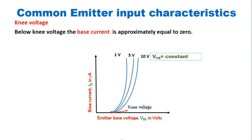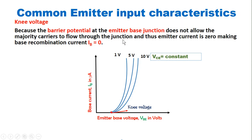From the diagram we can say that below this point — which is called the knee voltage — the base current is approximately equal to zero. This happens because the barrier potential at the emitter base junction does not allow the majority charge carriers to flow through the junction. Thus emitter current becomes zero, making the base recombination current IB also equal to zero. Therefore the base current does not flow when the base to emitter voltage is below this knee voltage.